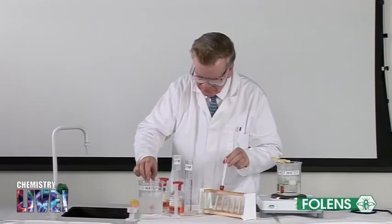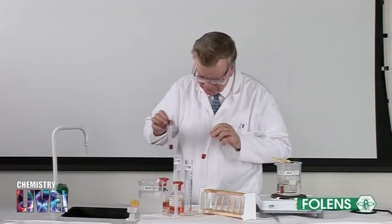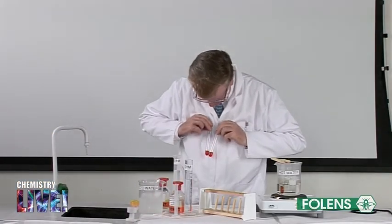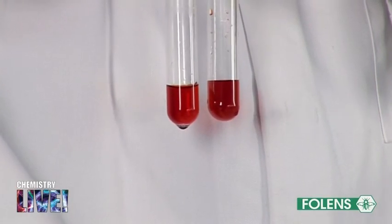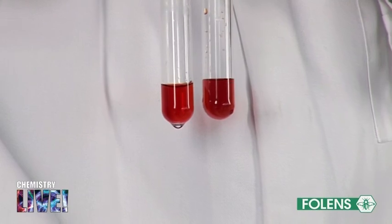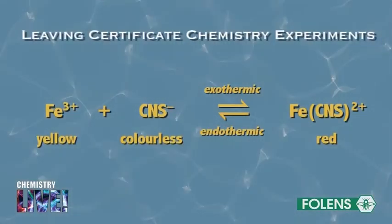In the test tube placed in ice, the equilibrium mixture should become more red, but this is hard to detect. In this case, the equilibrium shifts to the right of the equation shown on the screen. This shift to the right takes place in order to supply the heat that has been removed. Therefore, the colour changes to red. This again is in keeping with Le Chatelier's principle.